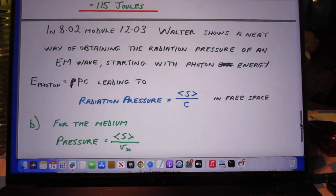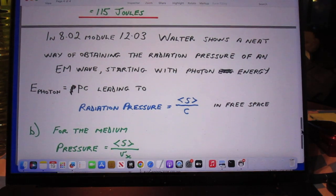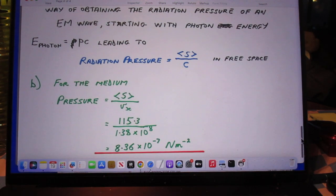But Keys goes one step further. In 802 module 12.03, those are my help sessions, Walter shows a neat way to obtaining the radiation pressure of an electromagnetic wave, starting with photon energy. The energy of a photon is PC. Photons have no mass, but they have energy and they have momentum P.